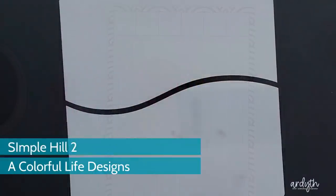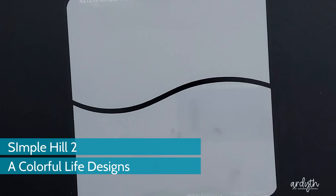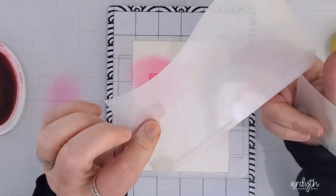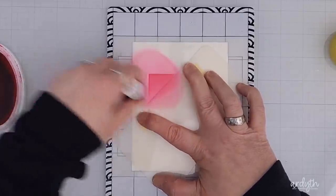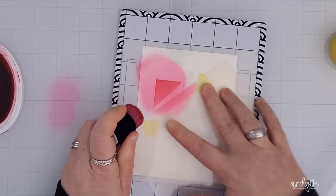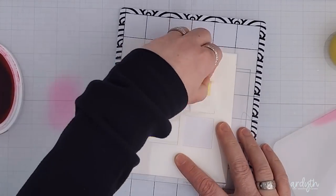Here's the Simple Hill 2 stencil. It comes with two pieces that fit together perfectly to help you mask the ground and sky when you build scenes, but I'm actually going to use the straight bottom edge to mask half my square before going back in with another layer of the same ink.